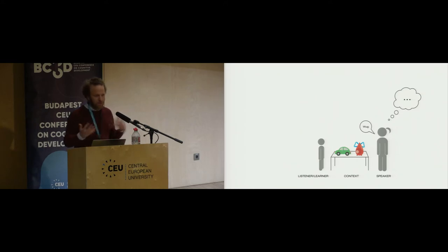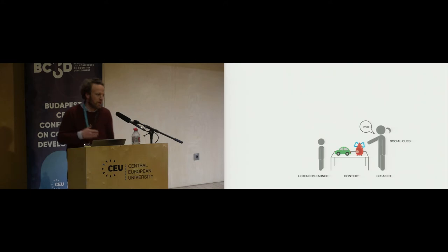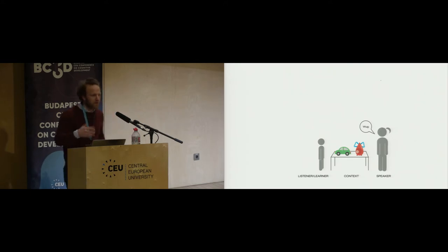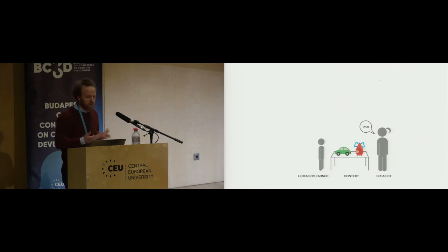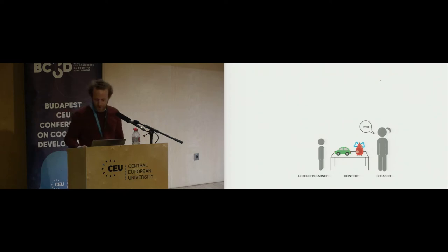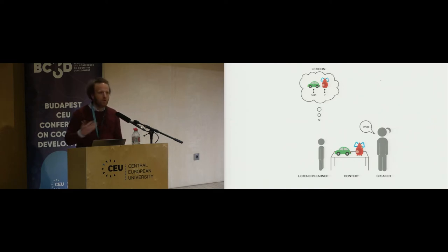There are different types of information children can use. An obvious source would be social cues — if the speaker is pointing to one of the objects and saying 'wug,' that's good evidence it refers to that object. But beyond directly observable cues, there are also more psychological information sources, such as the child's already-established lexicon. If the child has already learned the word, identifying the referent is easy; otherwise they need to look further.